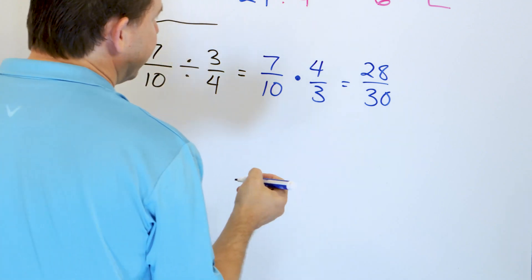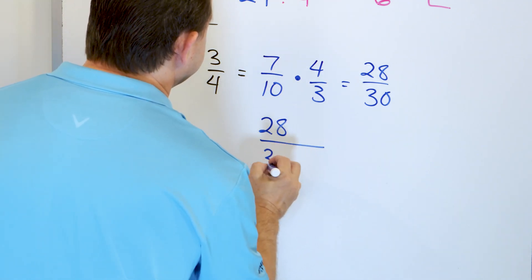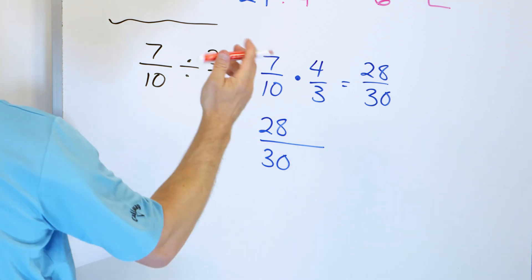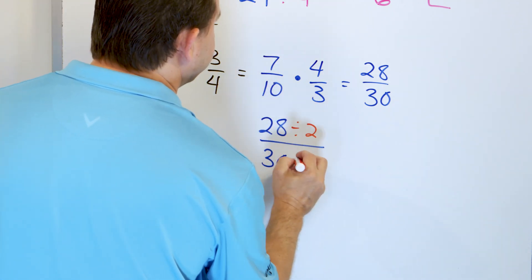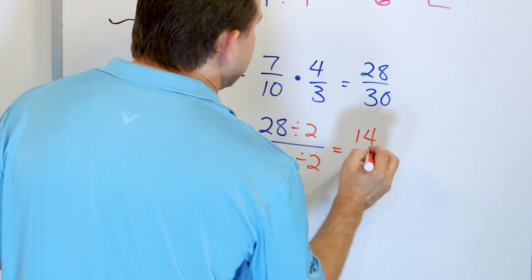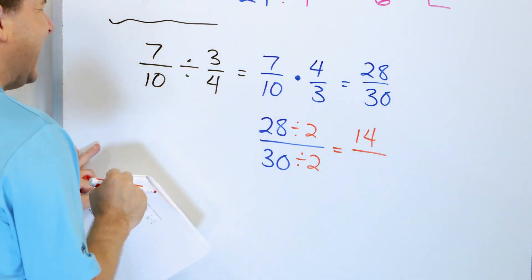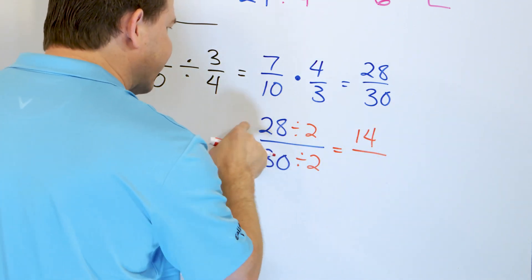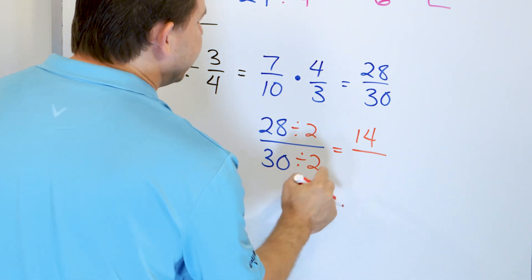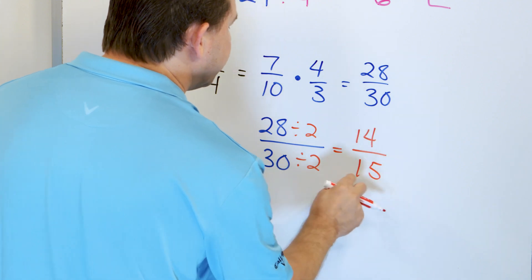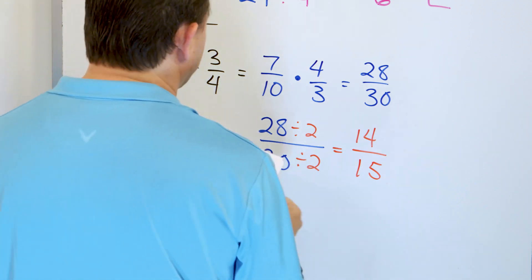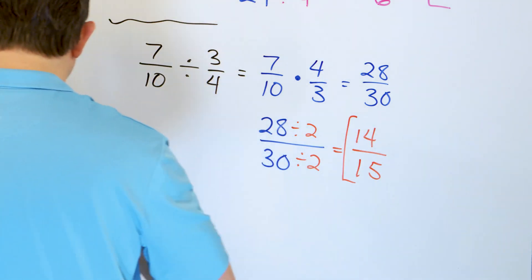Now, of course, these are both even. So you can definitely simplify this. 28/30. And I know that I can divide by 2. So I'm going to divide the top by 2 and the bottom by 2. 28 divided by 2 is actually 14. 14 times 2 is 28. If you're not sure, you can just actually do the division on the side or just multiply 2 times 14, you get 28. And then 30 divided by 2 is 15. Same thing. Multiply these and you'll get 30. If you're not sure, do the long division off to the side. But we get an answer of 14/15 and that's the final answer.